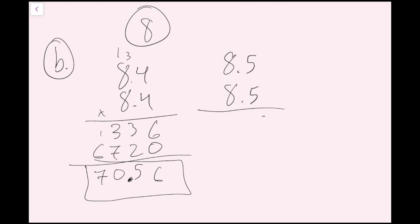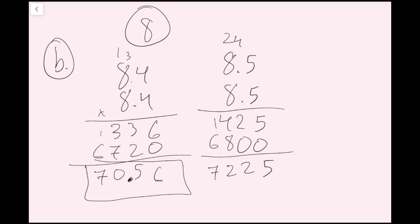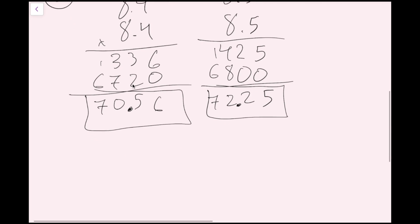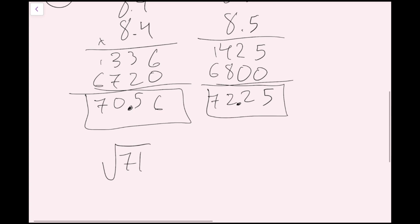Since 8.4 squared equals 70.56 is closer to 71 than 8.5 squared equals 72.25, the nearest tenth approximation of the square root of 71 is 8.4.